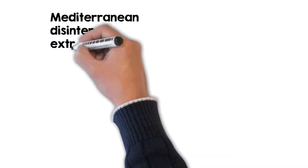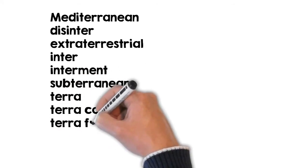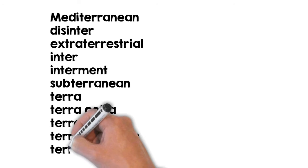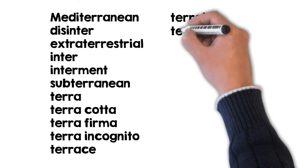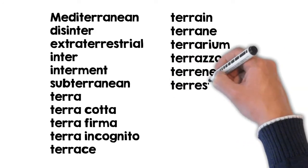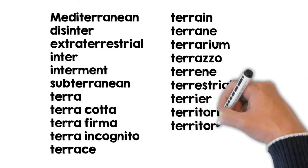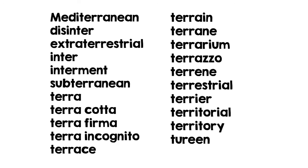Your organizer has 25 lines for example words containing the root word T-E-R-R. If you did not fill in all the lines, add more examples using this list: Mediterranean, disinter, extraterrestrial, inter, interment, subterranean, terra, terracotta, terra firma, terra incognita, terrace, terrain, terrarium, terrazzo, terrine, terrestrial, terrier, territorial, territory.